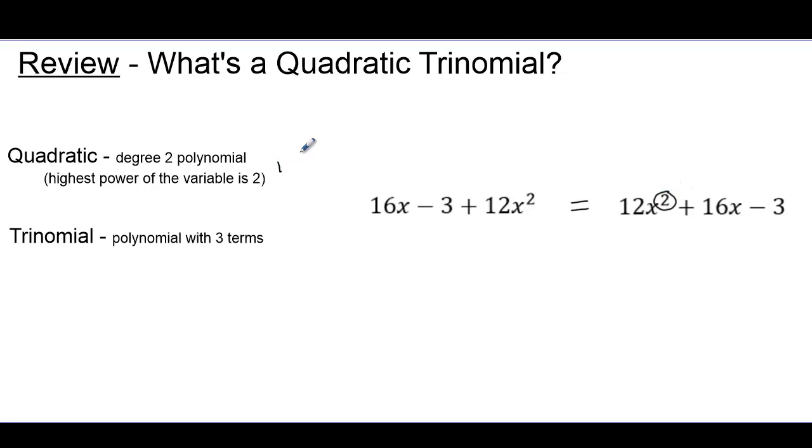Though we usually write it like this, where the powers of the variable are in descending order. So again, the squared term and nothing higher makes it a quadratic. And here we can count three terms separated by addition. This subtraction really means we're adding a negative term, and so it's clearly a trinomial.